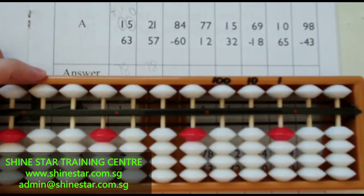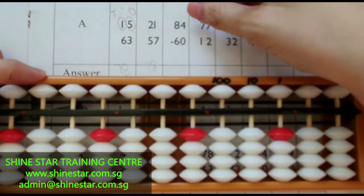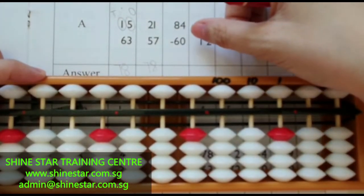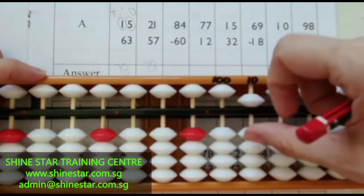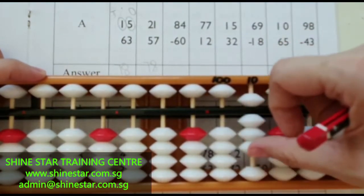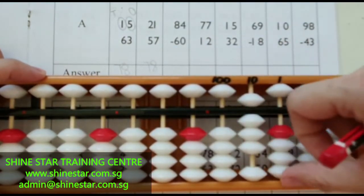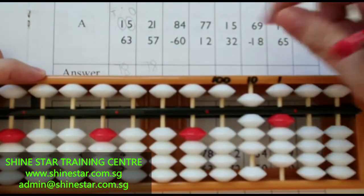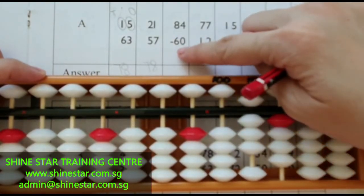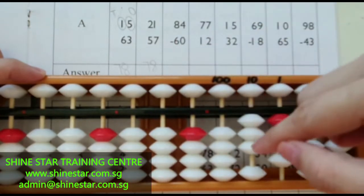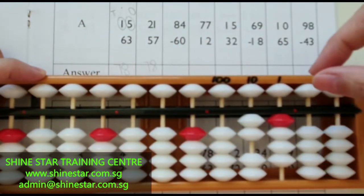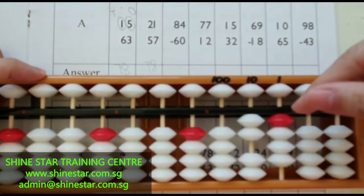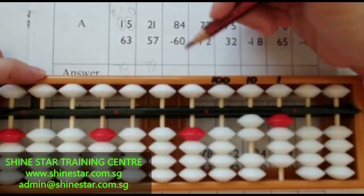The next question: eighty-four minus sixty. Fifty, sixty, seventy, eighty. Four. Minus sixty. Fifty, sixty. The answer is twenty-four.